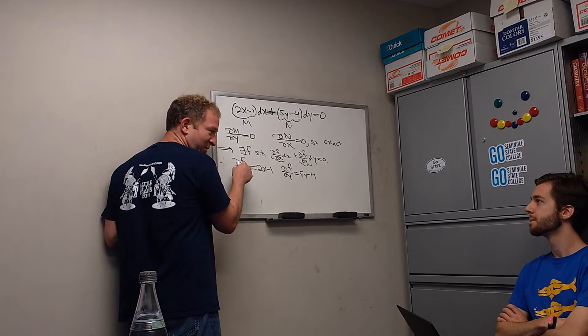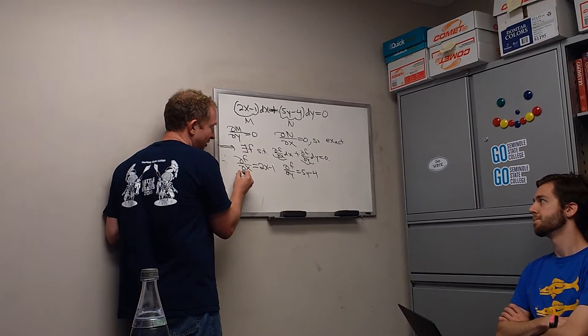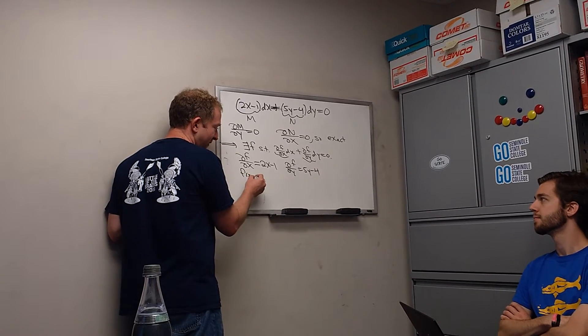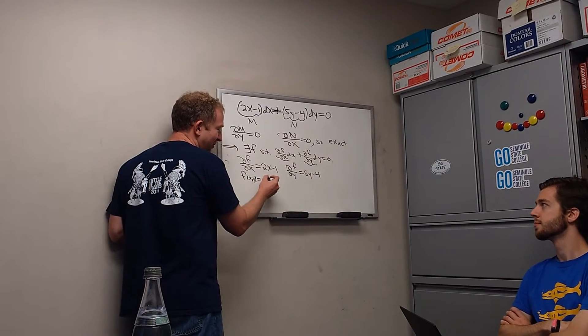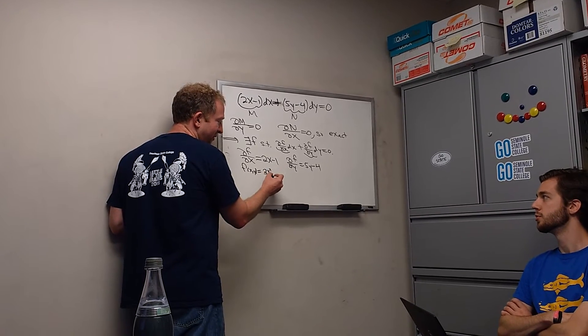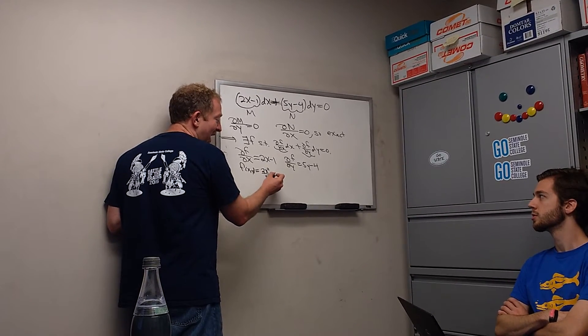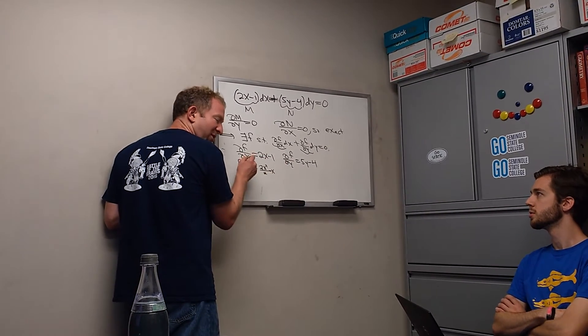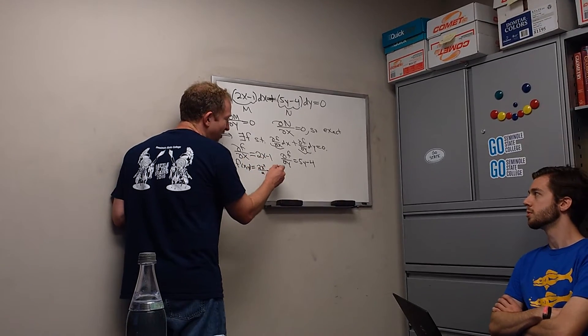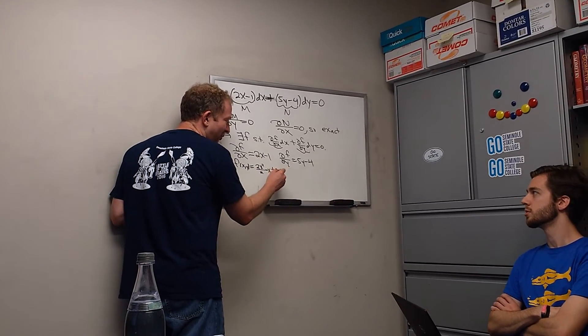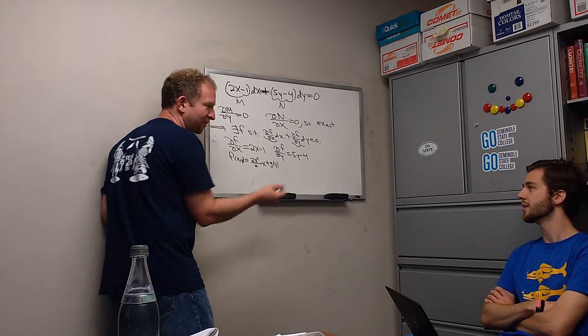because it's del f del x. So f of xy. So integrating with respect to x. So it's x squared minus x. And normally you're supposed to add c, but it's a partial derivative. Partial derivative. So we're going to add an unknown function of y. That's how it works. G of y? Yeah.